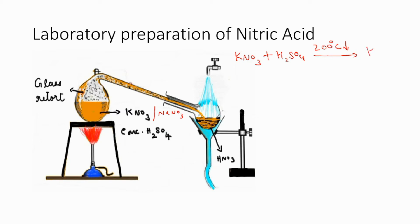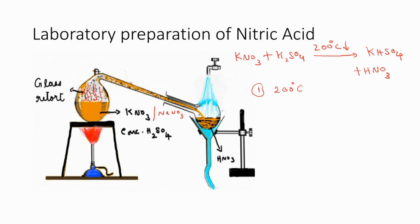When potassium nitrate and concentrated sulfuric acid are heated below 200°C, you get potassium bisulfate along with nitric acid. Because the reaction mixture is at a high temperature, nitric acid will not remain in liquid state — it converts into vapor. These nitric acid vapors are then condensed to obtain concentrated nitric acid in liquid state. If the mixture is heated above 200°C, you get potassium sulfate instead, which forms a hard crust that sticks to the glass apparatus, is difficult to remove, consumes more fuel, and can even break the apparatus.